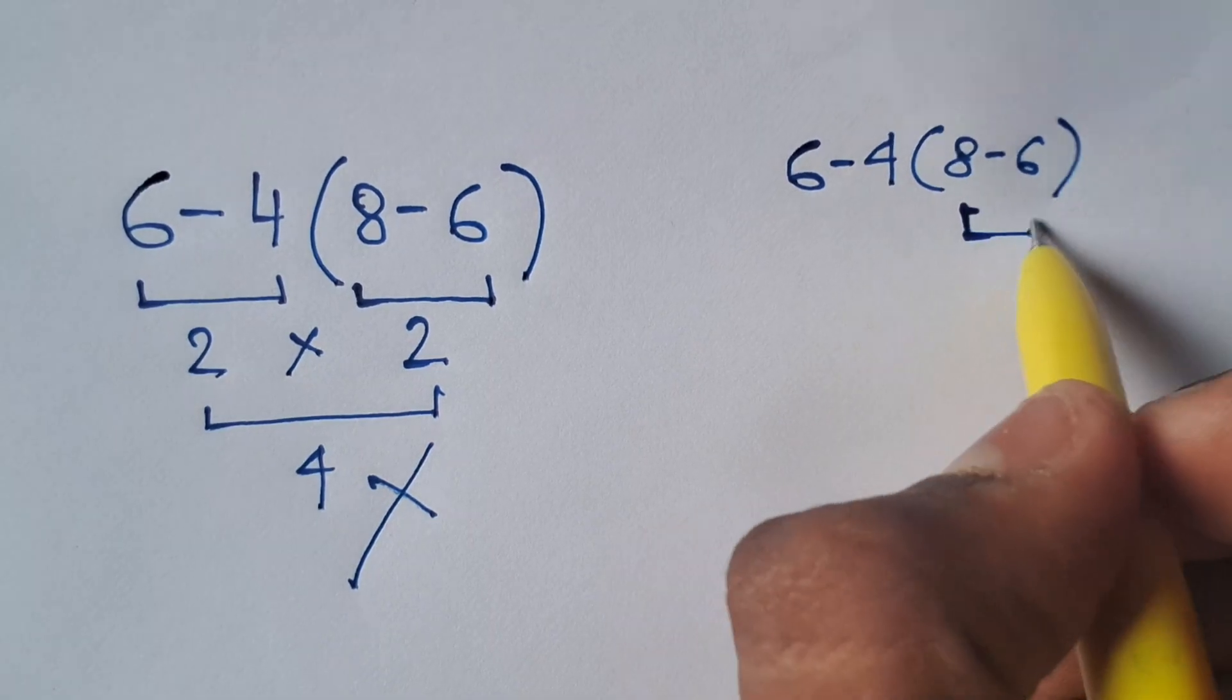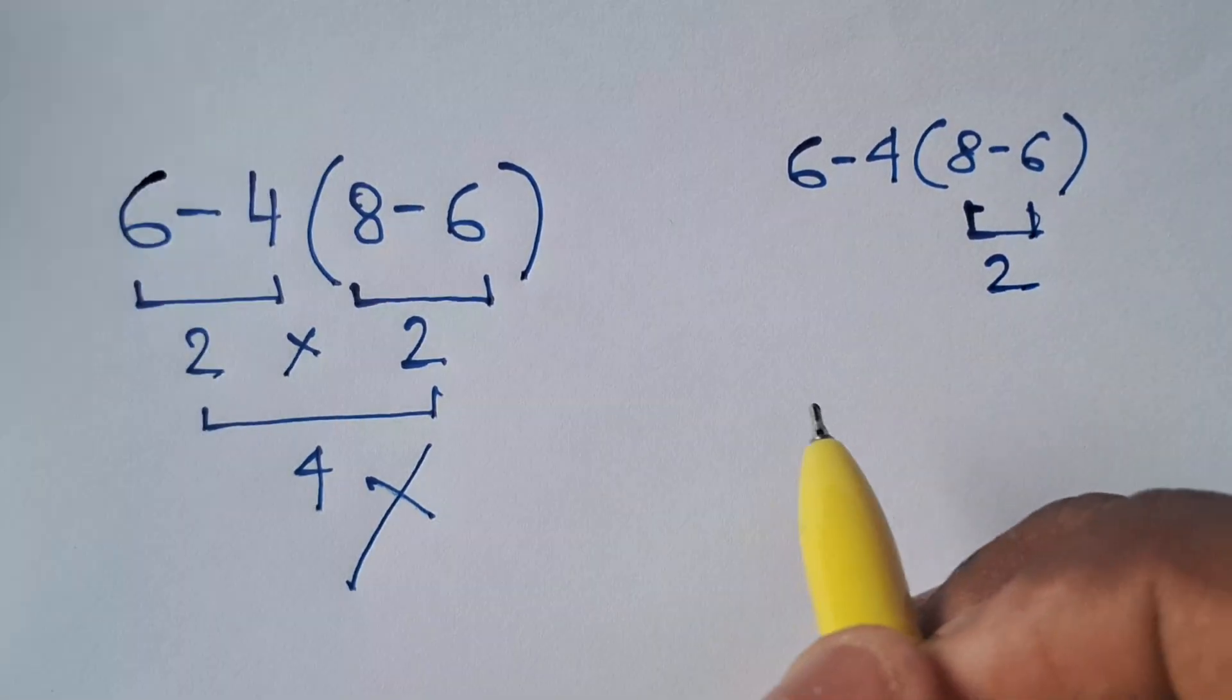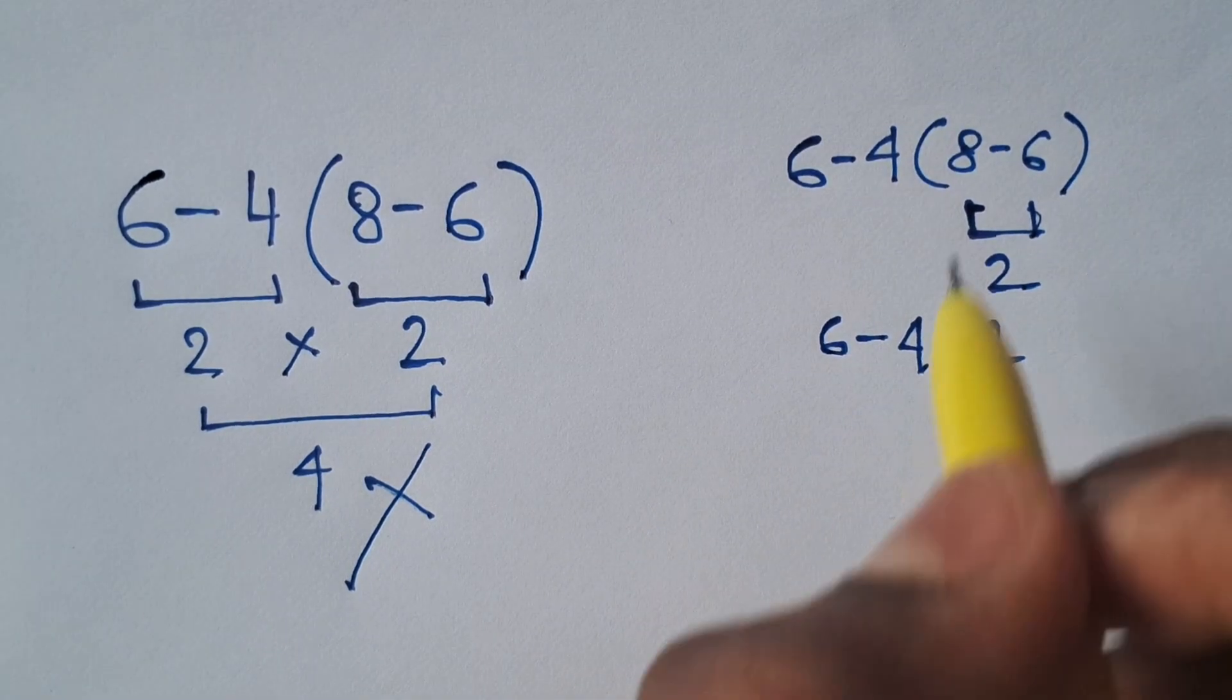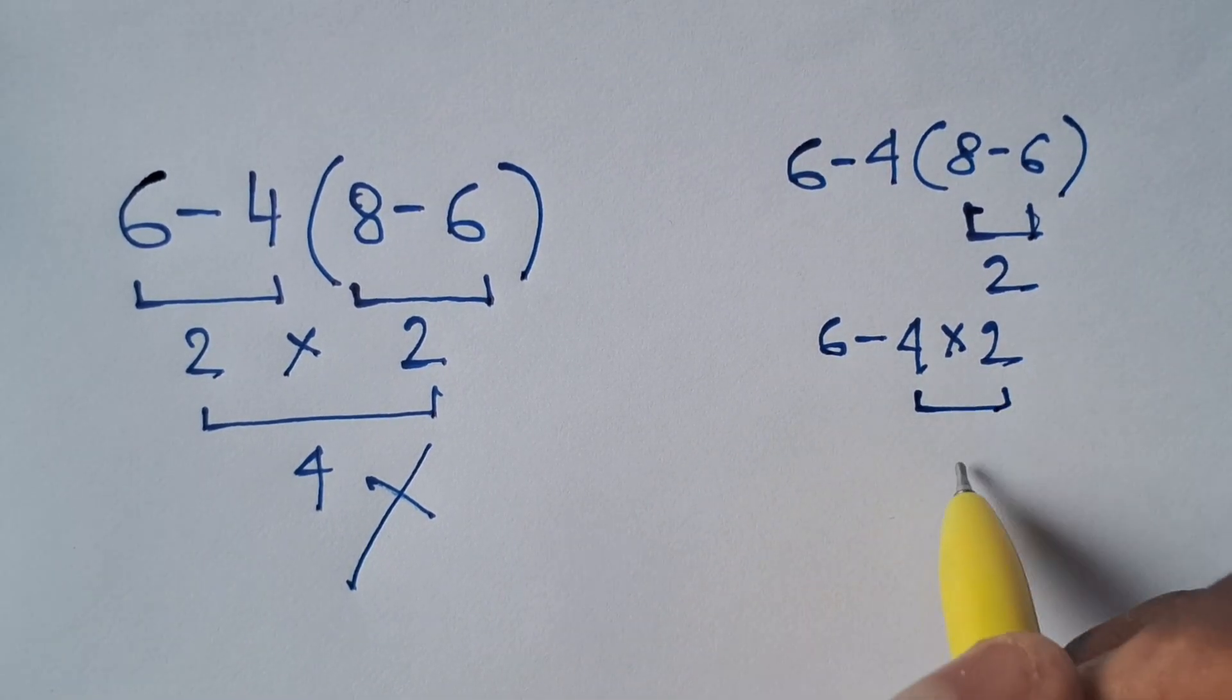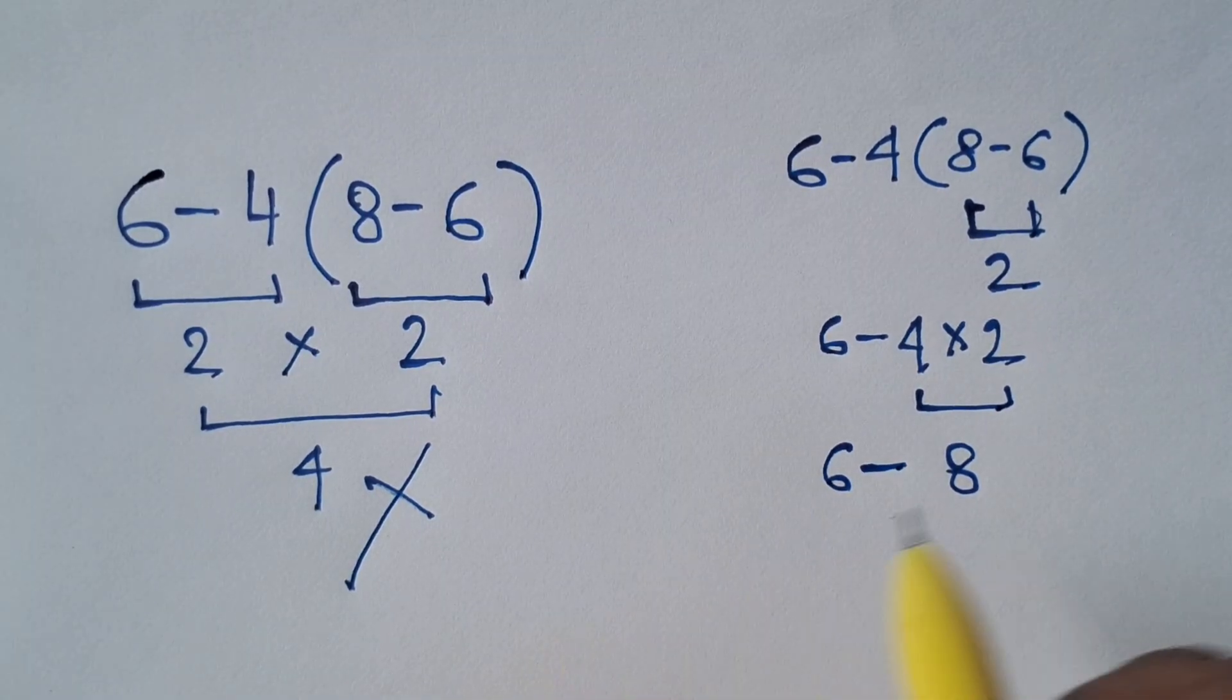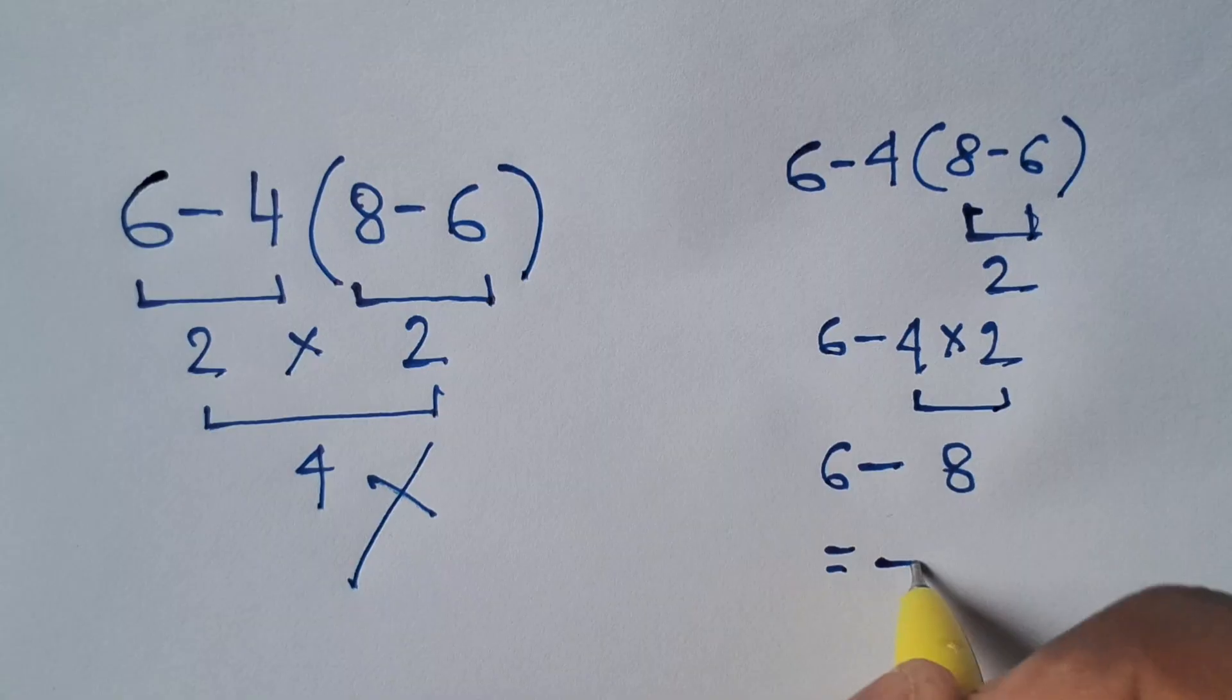Now 8-6 becomes 2. Now the expression becomes 6-4 times 2. First, solve the multiplication. So 4 times 2 equals 8 and the final solution for the expression becomes 6-8 equals -2.